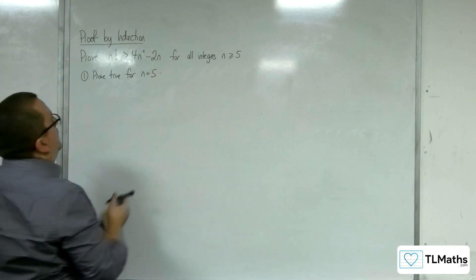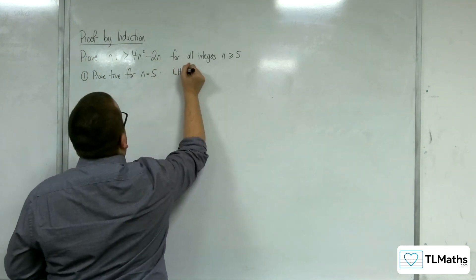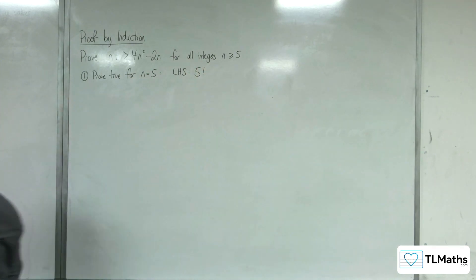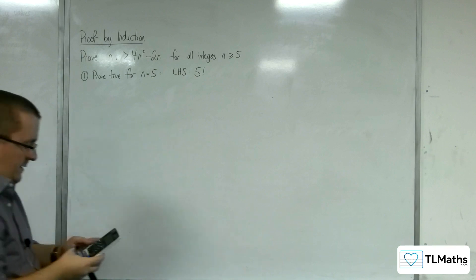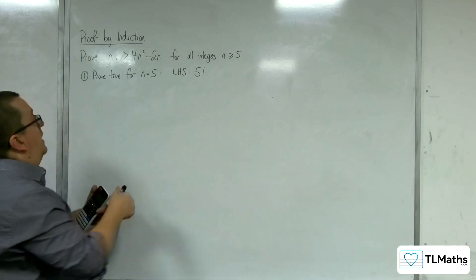OK, so the left hand side, we've got 5 factorial, so let's plug that into the calculator. 5 factorial is 120.